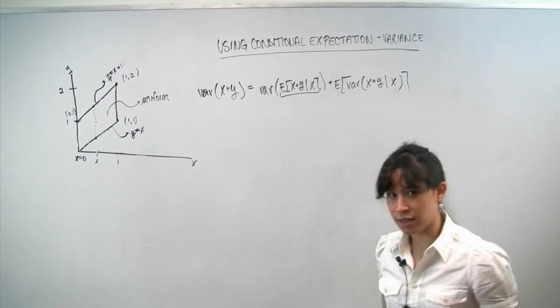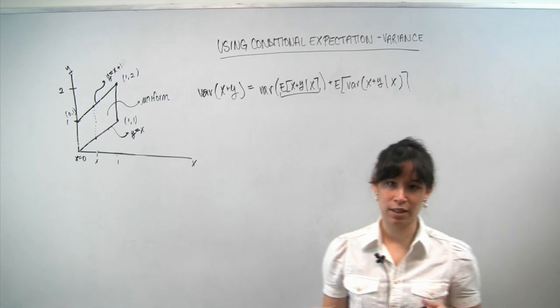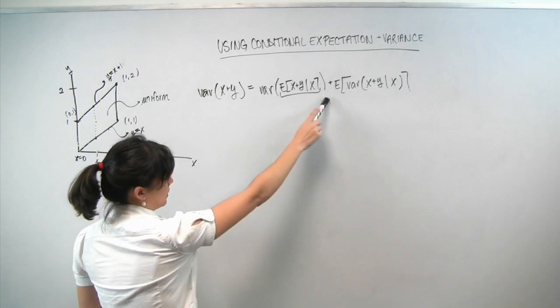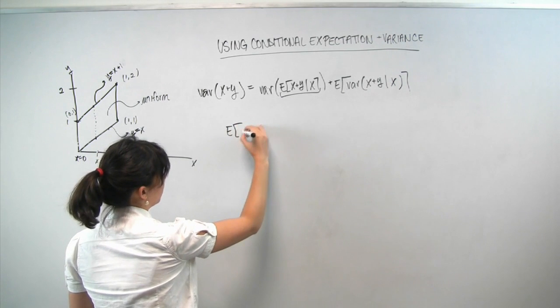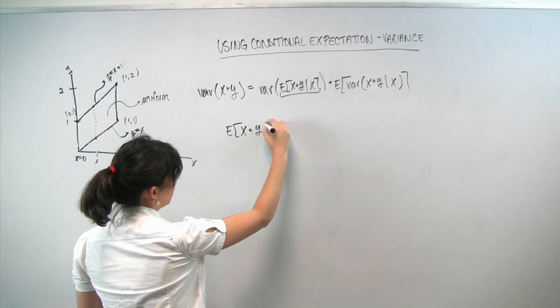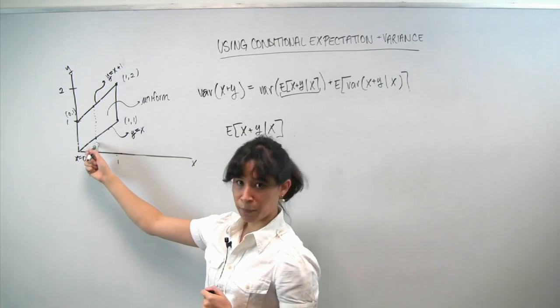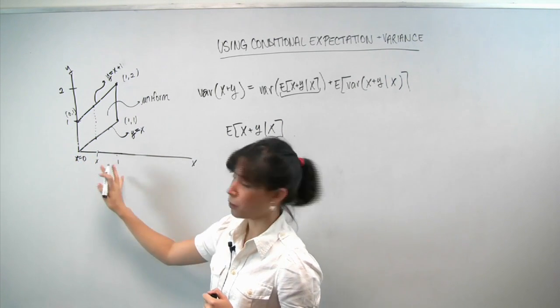So this formula can seem quite intimidating because we have nested variances and expectations going on. But we'll just take it slowly, step by step. So first I want to focus on this term, the conditional expectation of x plus y, conditioned on x. So coming back over to this picture, if you condition, if you fix an arbitrary x in the interval 0 to 1, we're restricting ourselves to this universe.